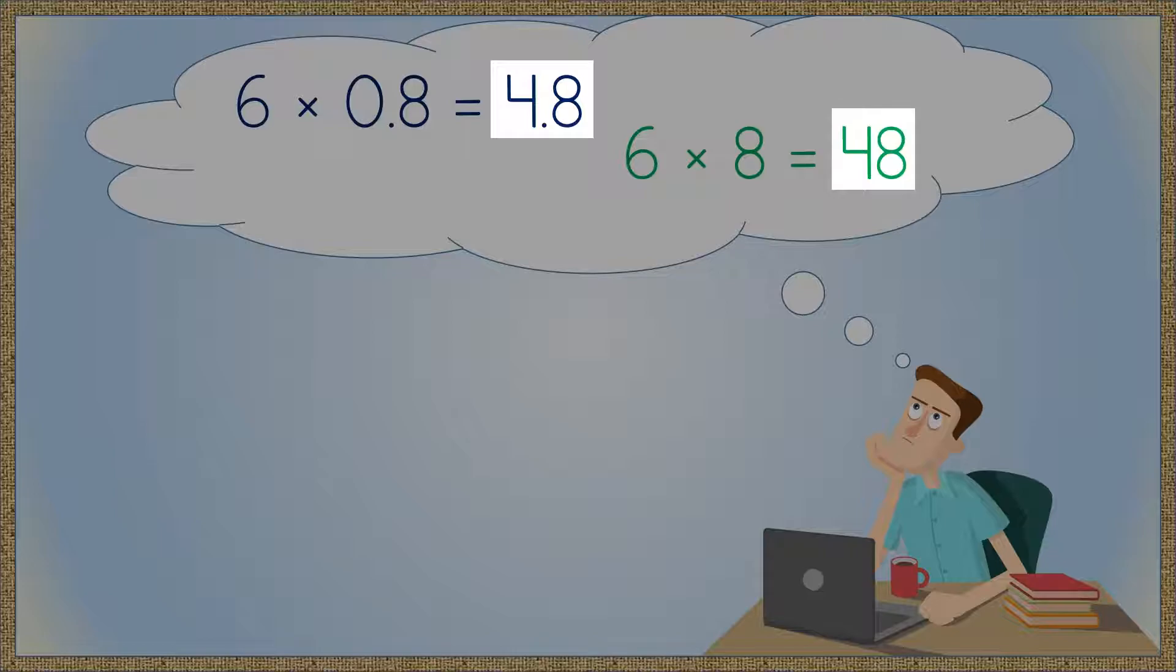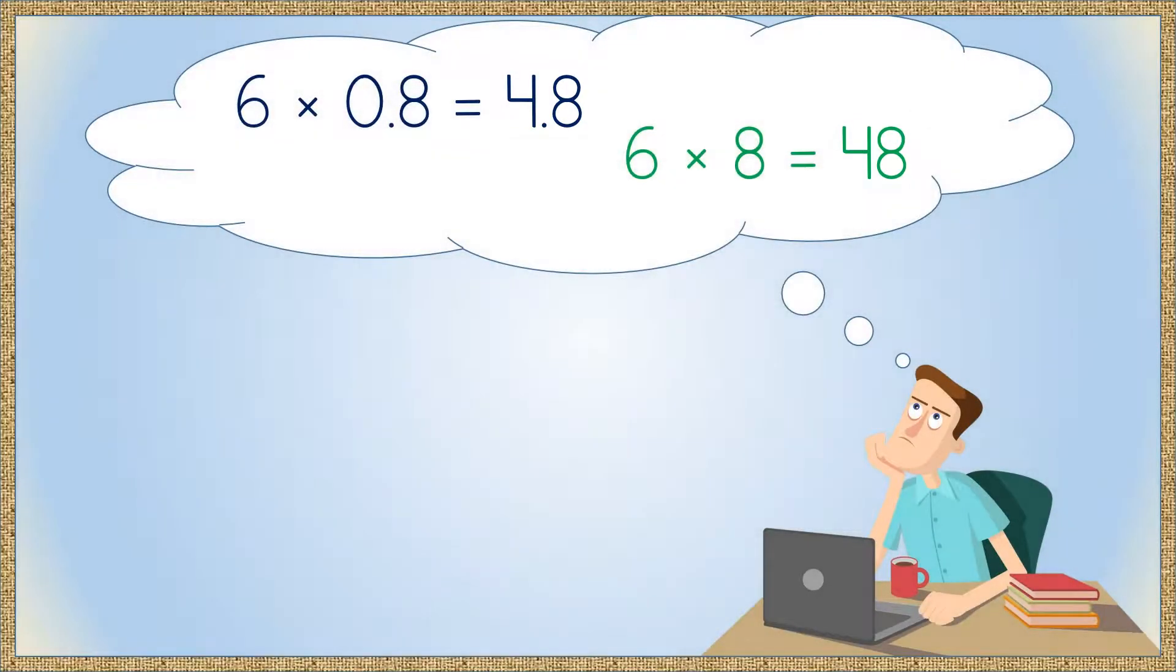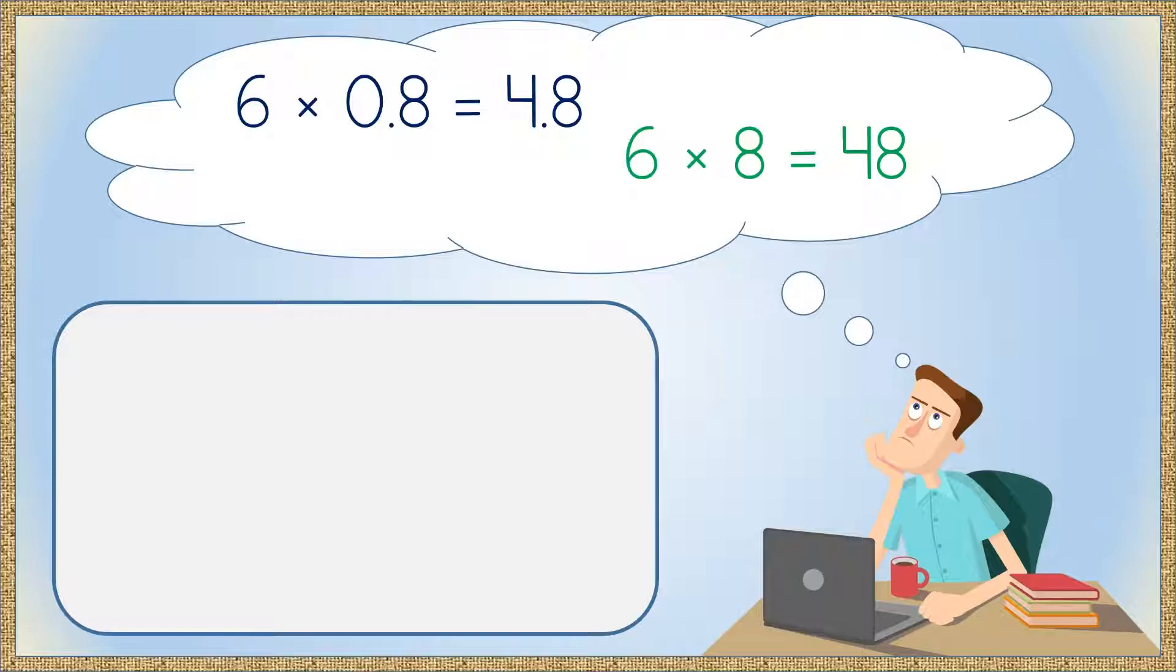And, of course, that makes them different values. In earlier lessons, you learned that dividing a number by 10 shifts the decimal point to the left, so the value of the number decreases by a factor of 10, like this.